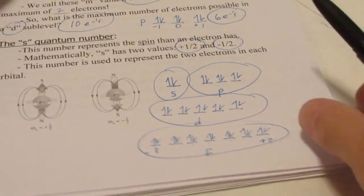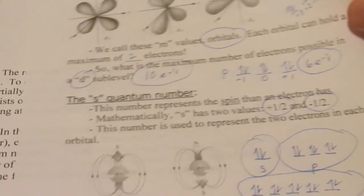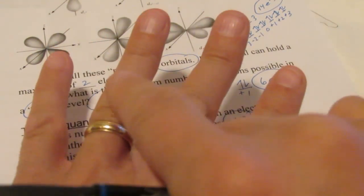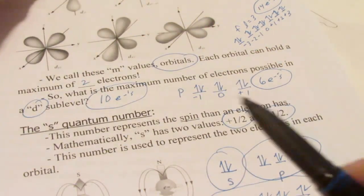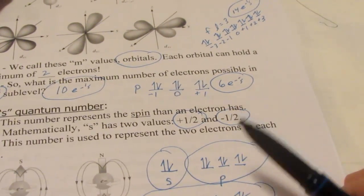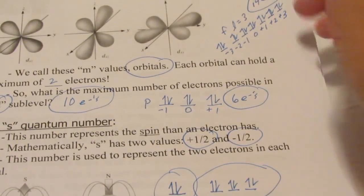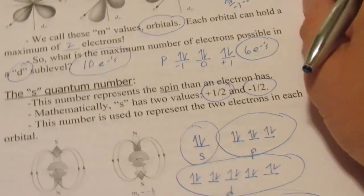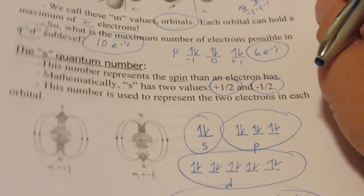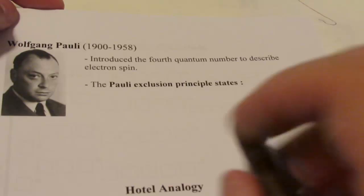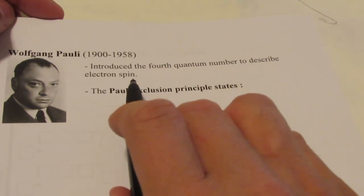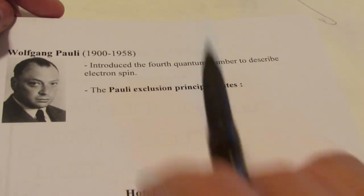Alright, let's wrap this up. As a quick recap, we have four quantum numbers: N, L, M, and S. N is the energy level. L is the sublevel. M is the orientation of that sublevel, or the orbital. And S is the spin of the electrons within that orbital. Now let me wrap up by talking about Wolfgang Pauli — he's the one who introduced that fourth quantum number, the spin quantum number.